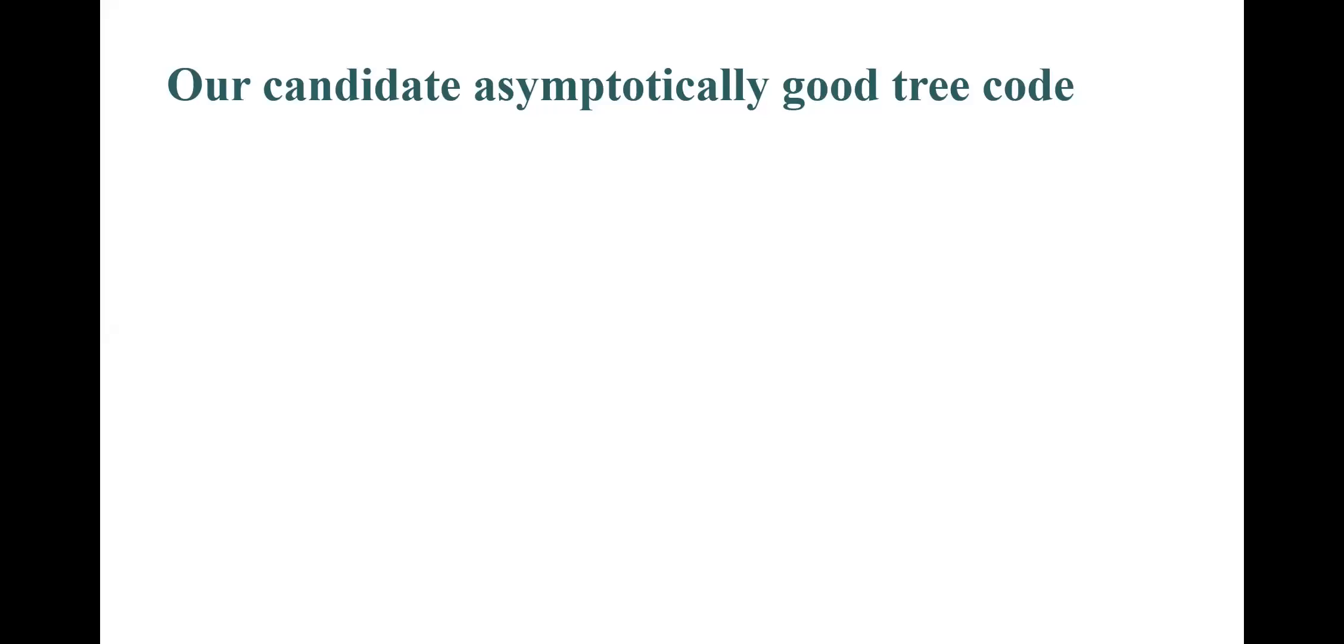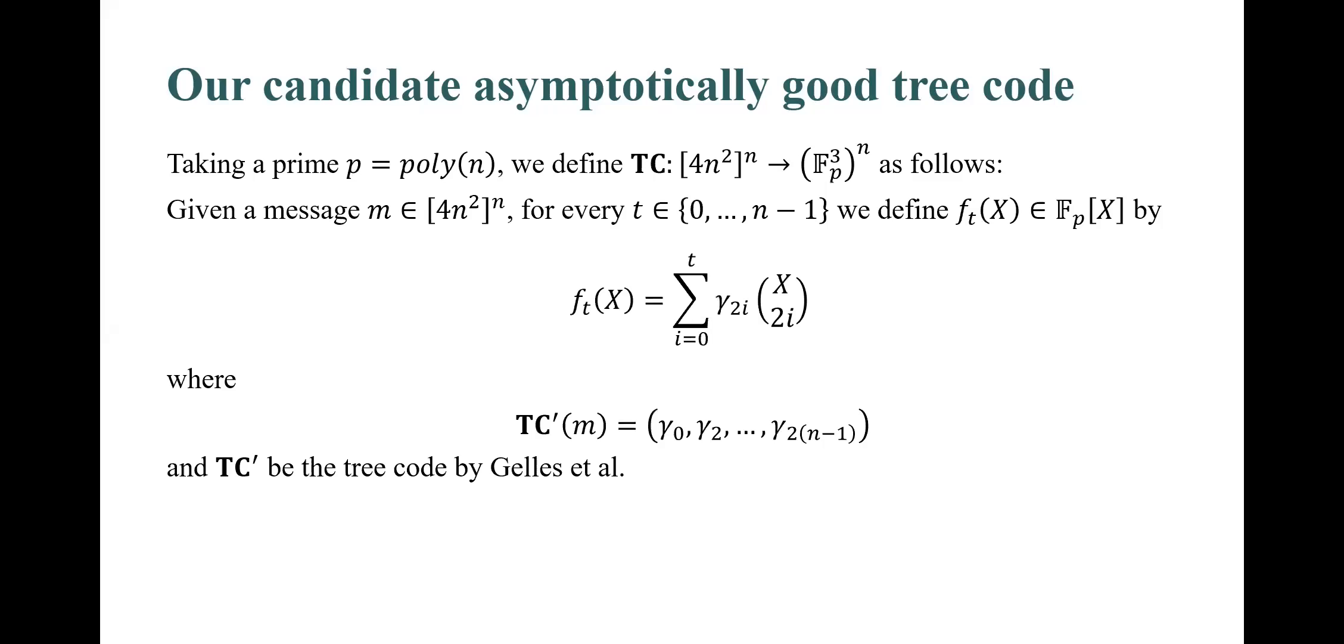Now, I'll introduce our candidate construction. Taking a polynomially large prime p that's provided by the PDC conjecture, we define the tree code TC as follows. Given a message M, we define F_t to be a polynomial in the Newton basis. To make sure that F_t is not too sparse, we make use of the tree code TC_G by Gelles et al. We first apply the tree code TC_G over the given message and use the output symbols as coefficients. This action enables the realization of the PDC conjecture. Then, on time t, we output the t coefficient gamma_2t and two evaluation points of F_t.